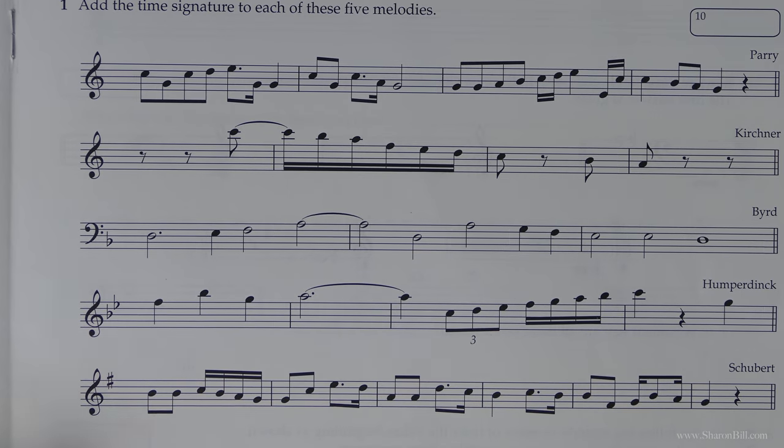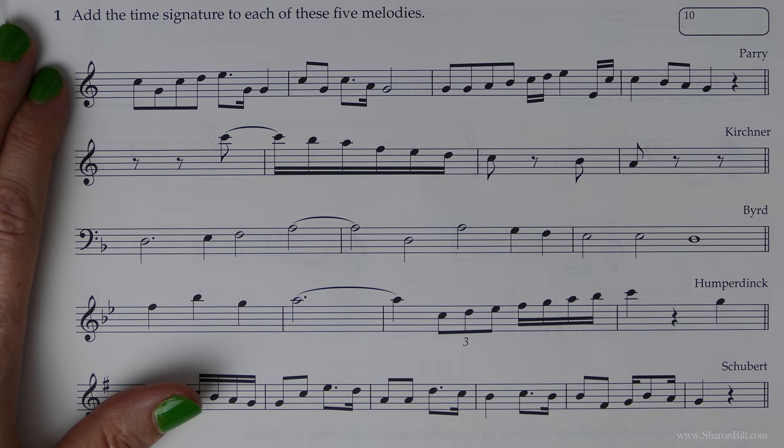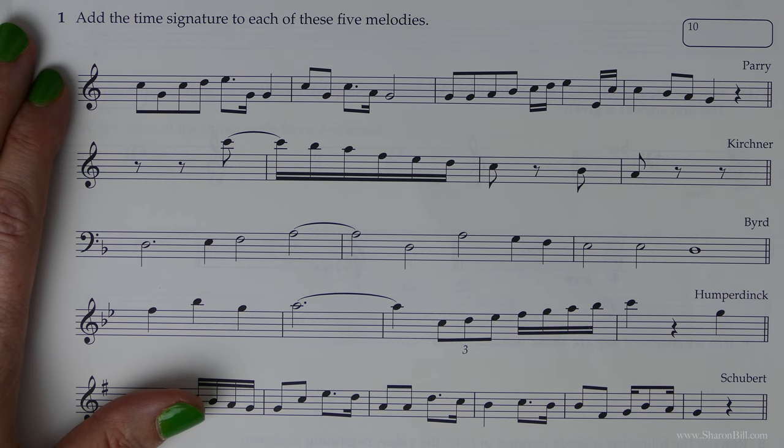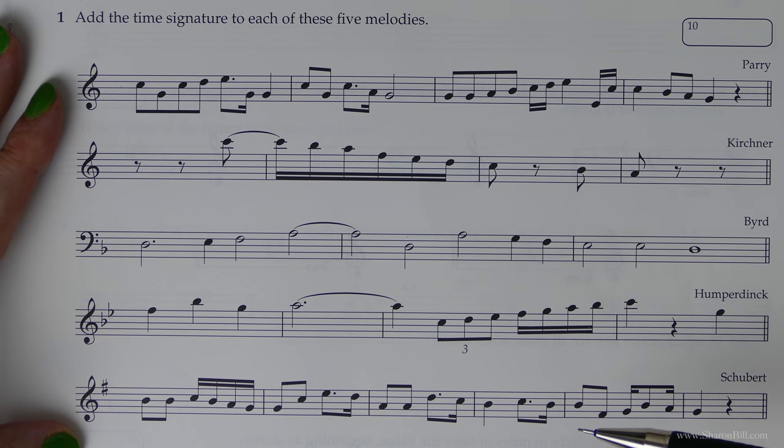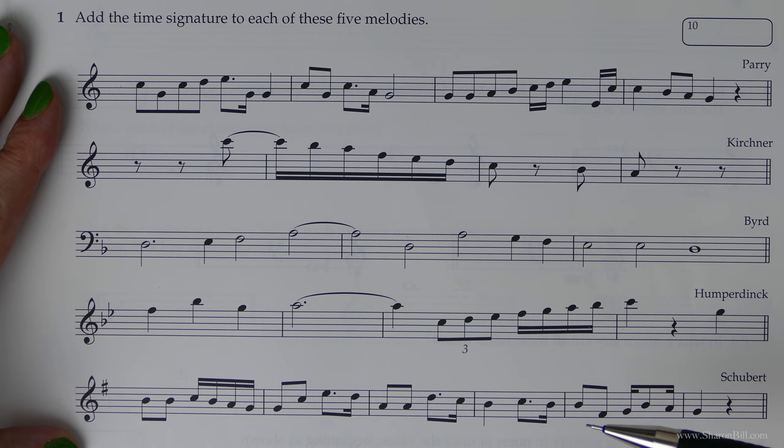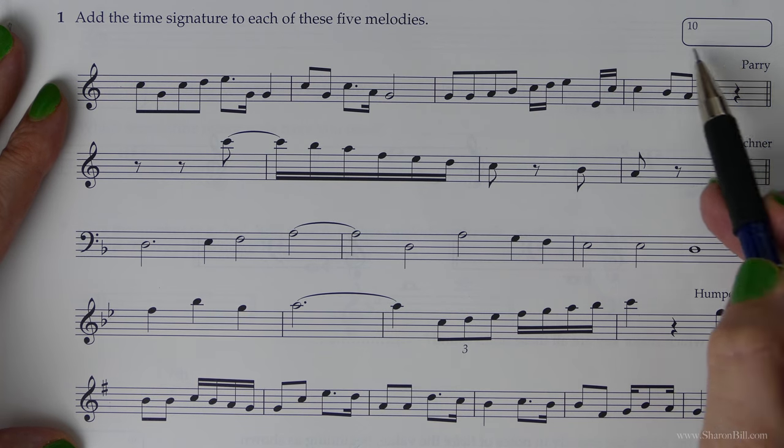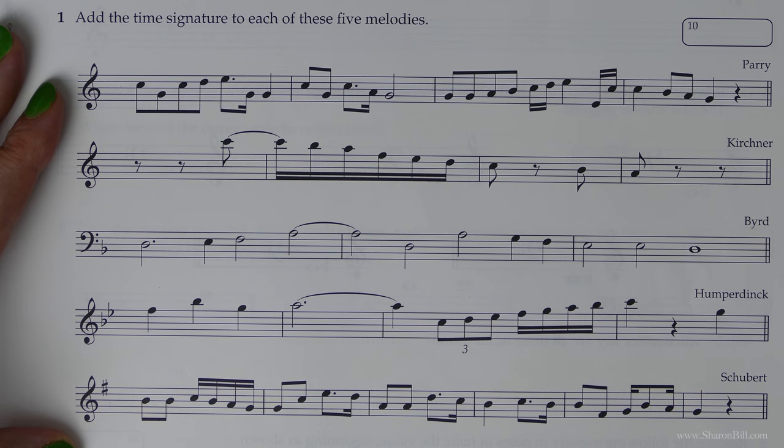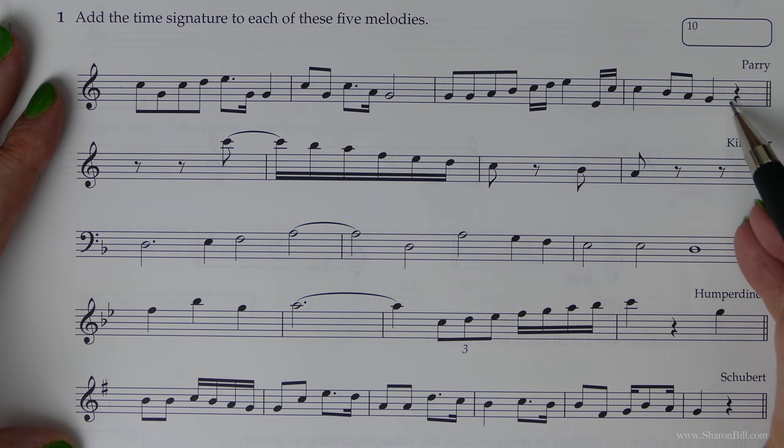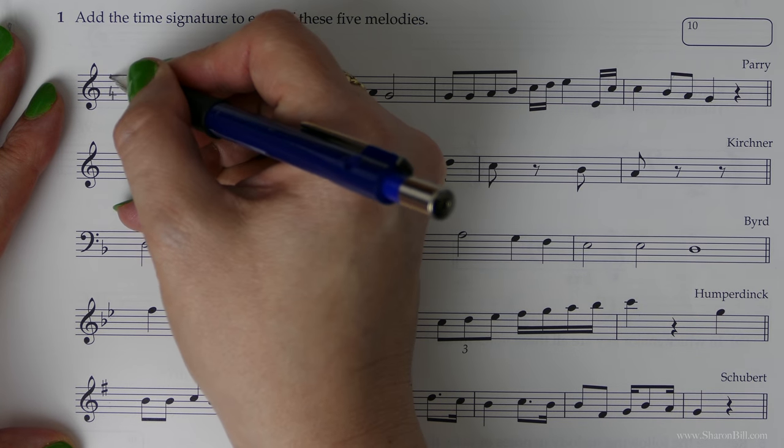Question one asks us to add the time signature to each of these five melodies. You just need to be careful because each one of these will require a different time signature. The first thing we need to do is decide what the bottom number will be. Are we counting in crotchet beats or quarter notes, quaver beats or eighth notes, or minim beats which are half notes? I suggest you glance through at an easy bar that gives you a quick, easy answer. This last bar shows we're divided into twos, in groups of two, so we know we're counting in crotchet beats. We can see there are one, two, three, four crotchet beats.